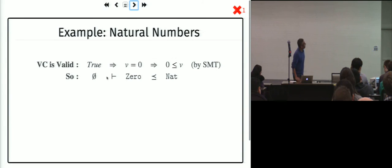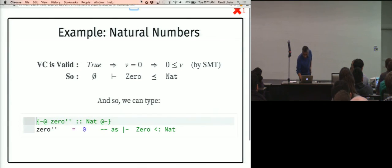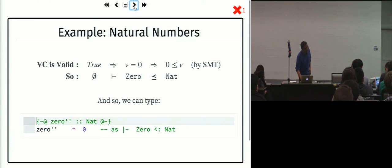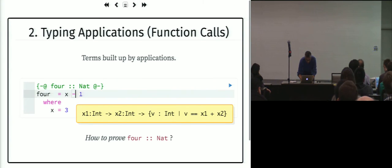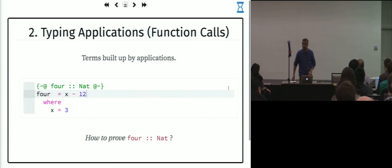The type V such that Q is a subtype of V such that R if the logical formula Q implies R. Hence the name predicate subtyping. The reason zero is a subtype of NAT is because the SMT solver can prove that when value equals zero, that implies value is greater than or equal to zero. Pretty straightforward.